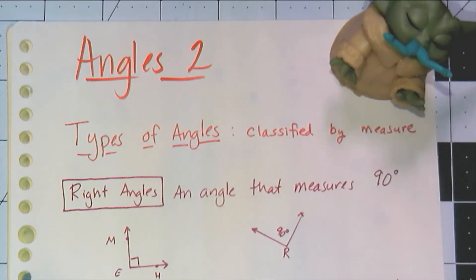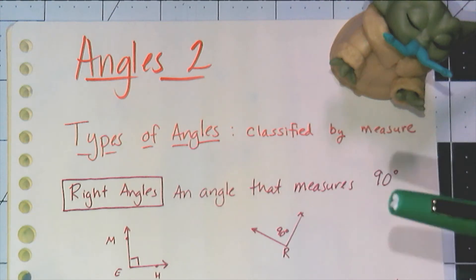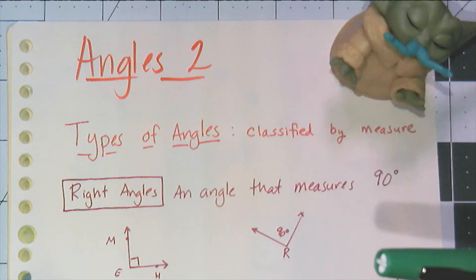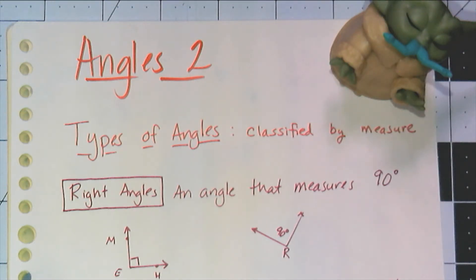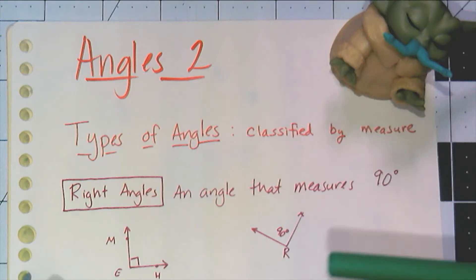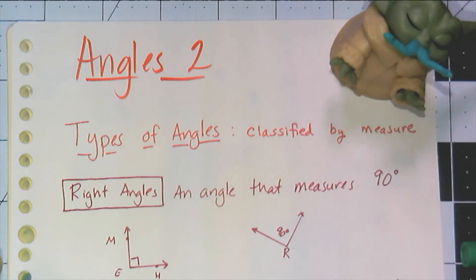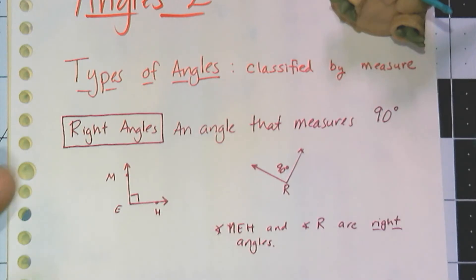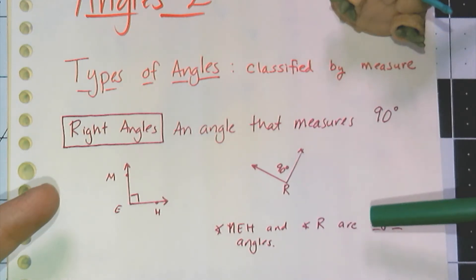Hey y'all, in this video we're going to continue looking at angles. This time we're going to define some special types of angles and look at some special pairs of angles. So let's start off with classifying some angles by their measure, which will group angles into different types of angles.